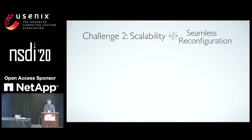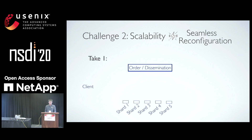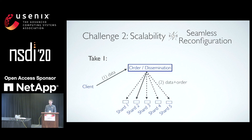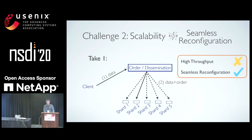The second challenge is how to achieve scalability and seamless reconfiguration at the same time. A natural approach is to assign a single component for record dissemination and ordering. For instance, a log device takes this approach — clients send their records to a sequencer, which assigns them a sequence number and sends them to a shard. Since the same component is responsible for both record dissemination and ordering, it can easily handle reconfiguration. When new shards are added or removed, the log is still available. However, the centralized design has an obvious downside: the single component can quickly become a bottleneck, limiting throughput.